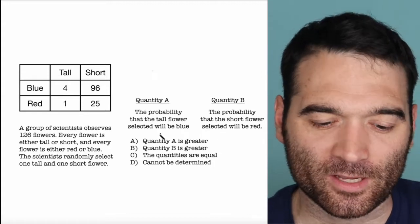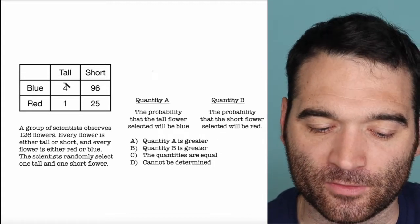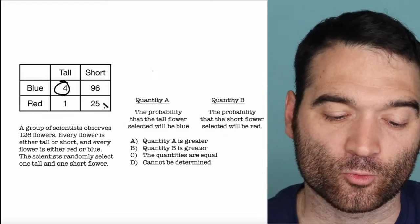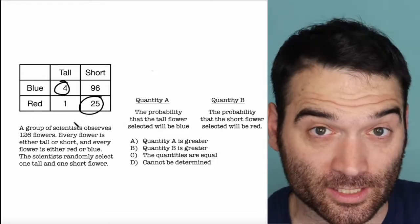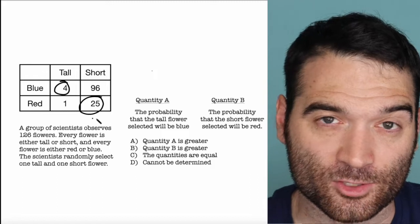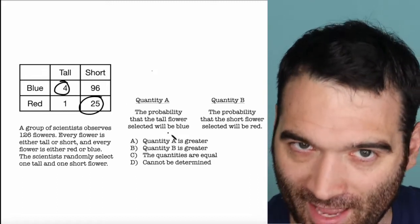A lot of people look at this and say, okay, well, I want a tall blue flower, four of those, and a short red flower. There are 25 of those. Clearly, quantity B is going to be greater, right? Because 25 is greater than four, but not so fast.